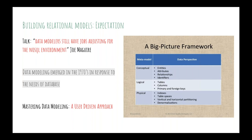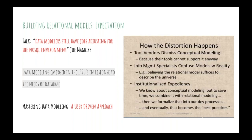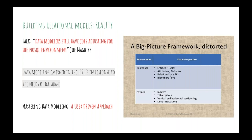The physical model is how data is actually stored on disk — indexes, table spaces, and so on. Joe McGuire notes there is a distortion when you translate from conceptual to logical and physical models, and developers tend to merge the conceptual and logical models in their thinking. In Neo4j, your logical model is essentially the same as your conceptual model. What you draw on the whiteboard maps directly to what you store.